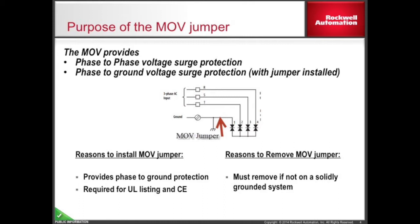The PE-A jumper should be installed on installations where the secondary of the transformer providing power to the drive is a Y connection with a solidly grounded neutral. This power system and jumper configuration is required on installations where UL or CE cabinet labeling is needed.